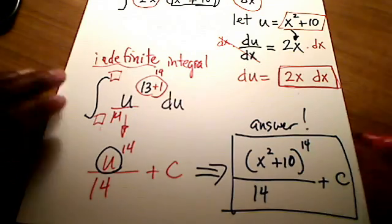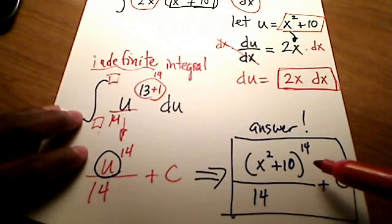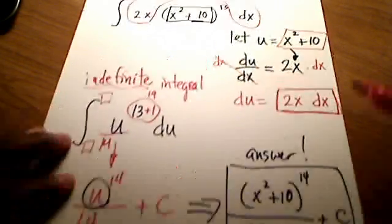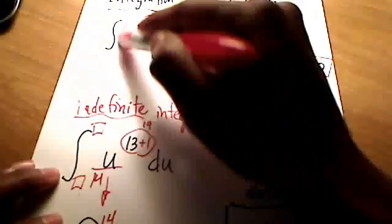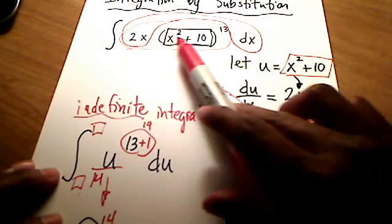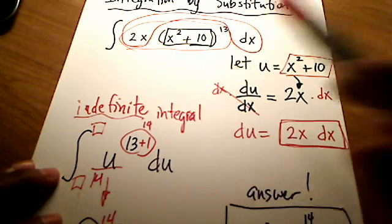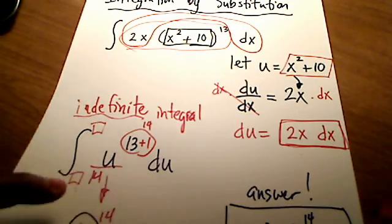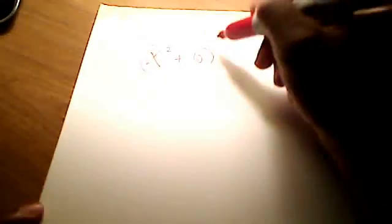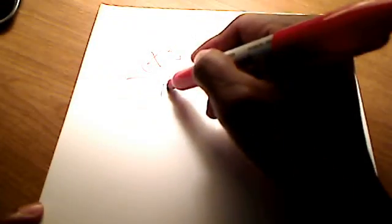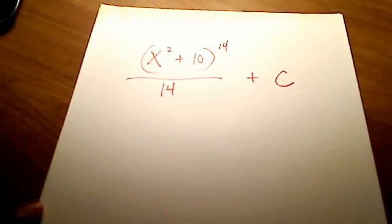Now let me just show one more thing to you, and that is this. When you have your answer, check to see if it's correct. Let's check to see if this is right, and if it takes us back to our original problem of 2x times quantity x squared plus 10 raised to the 13th power. So I'm going to check this answer, and the way I'm going to check that answer is I'm going to take, let me write this up here so you can see it, I'm going to take the derivative of this, and let's see if it goes back to our original problem.